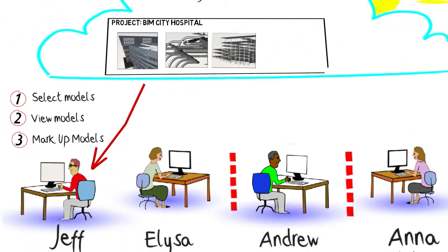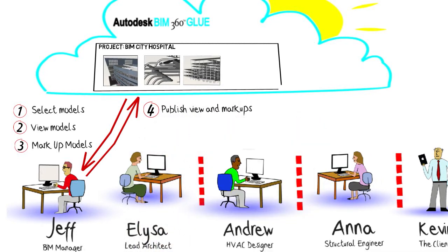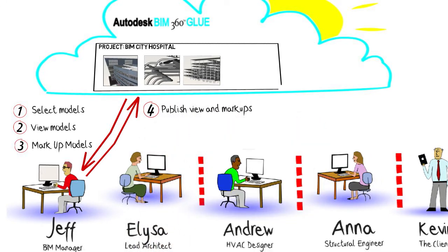Say that Jeff needs to publish views and markups to provide feedback to other project members. He can easily select the members to notify, add a message, and hit send. The team members will receive an email with a hyperlink directly to the markup that Jeff wants them to see. Jeff can do all of this without leaving BIM 360 Glue.